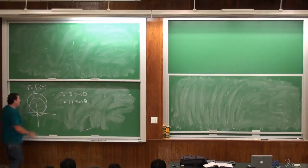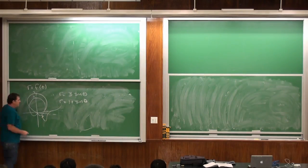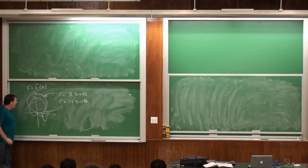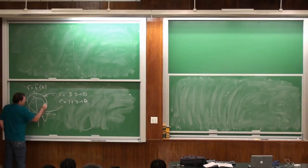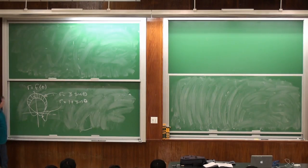So this graph — it's hard to tell which one I'm pointing at — that one is r equals 1 plus sine theta, and this one is r equals 3 sine theta. Let's find the area of this crescent shape.